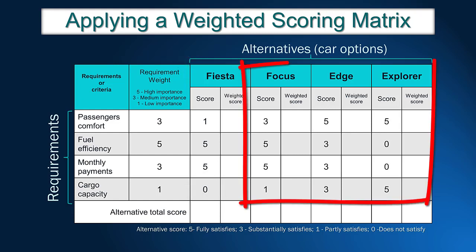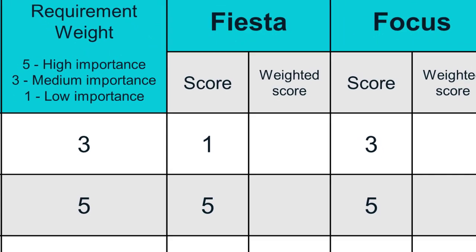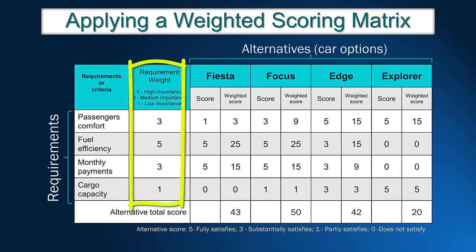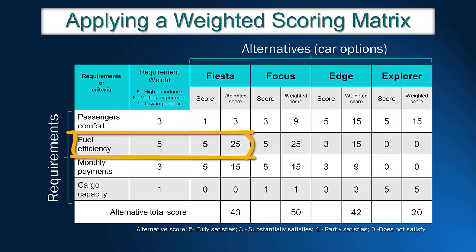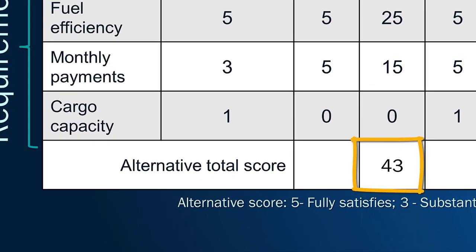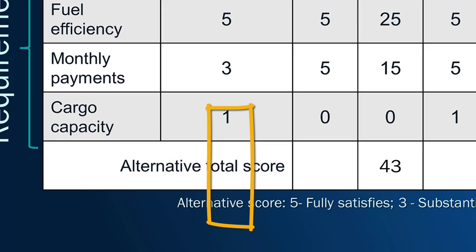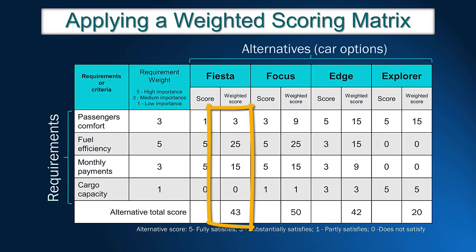After finishing the scoring for the Fiesta alternative, John needs to give scores for the remaining models. Once the scoring for all alternatives is finished, it is time to calculate the weighted score. The weighted score is calculated by multiplying the alternative score by the requirement weight. For instance, in terms of passenger comfort, Fiesta received score 1, so the weighted score will be 3 times 1, that is 3. For fuel efficiency, the weighted score is 5 times 5, which comes to 25. The total weighted score is obtained by adding up the weighted scores for each requirement. For Fiesta, the total weighted score is 3 plus 25 plus 15 plus 0, which comes to 43.